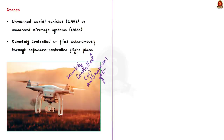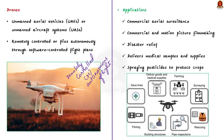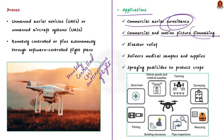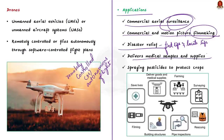Drones have been used for many purposes such as commercial aerial surveillance, commercial and motion picture filmmaking. They are also used in disaster relief — when sensors are added to a drone, it can help locate and save lives during natural disasters. Drones can also gather and deliver medical samples, supplies, and medicine to remote or unreachable areas in a disaster zone.